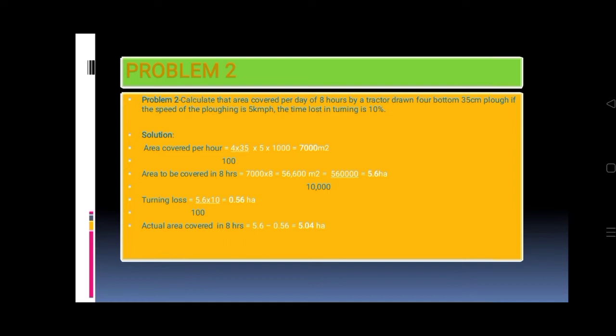Problem 2: Calculate the area covered per day of 8 hours by tractor drone for bottom 35 centimeter plow. The speed of plowing is 5 kilometer per hour, the time loss turning is 10 percent.